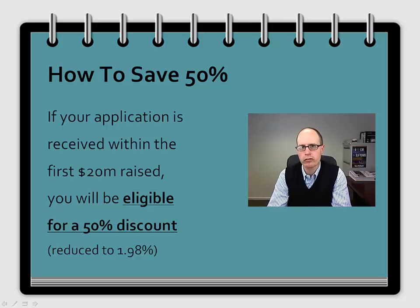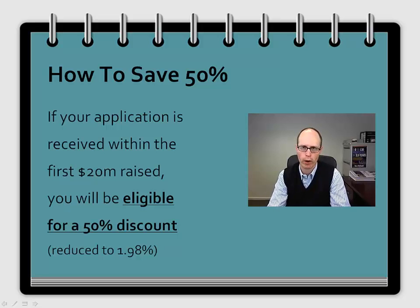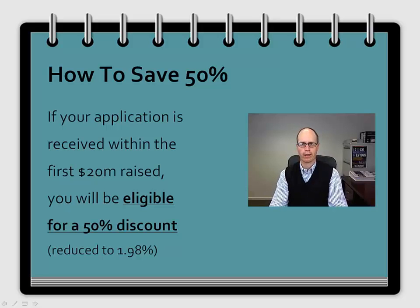You are able to save 50% of the contribution fee. The way to do that is to make sure that you send in your application money before we've raised the minimum $20 million. It's an incentive to encourage you to put your money in sooner rather than later, so that we can get the $20 million as soon as possible and start investing.